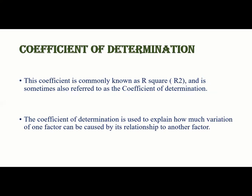Next, there is the coefficient of determination. It is very important to understand this concept when we talk about regression analysis. The coefficient is commonly known as R squared, and also known as the coefficient of determination. It is used to explain how much variation of one factor can be caused by its relationship to another factor.